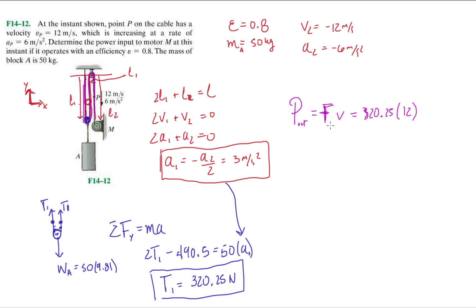Technically, these are vectors, this is a dot product. The force is pointing down, so it's negative 320.25 j dotted with minus 12 j. When you dot those together, you end up with a positive value. The dot product will give you a scalar, and then we end up getting 3843. Because we're in SI, we know this is watts.